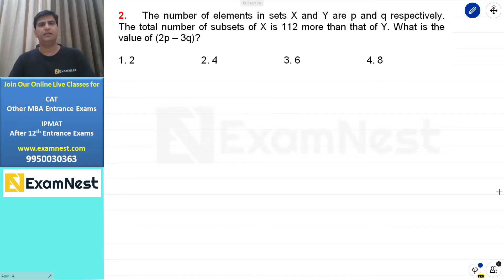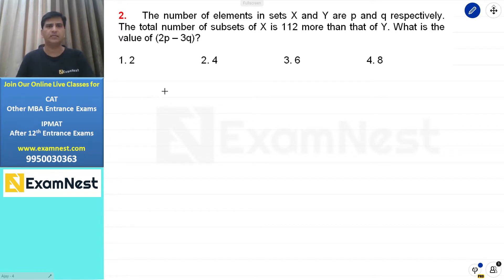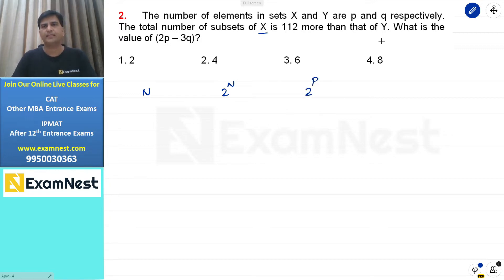Next question: sets X और Y में elements की संख्या P और Q respectively given है। Total subsets of X और total subsets of Y का difference 112 है। 2P minus 3Q की value निकालनी है। Subsets का formula है: N elements हों तो subsets होते हैं 2 raised to the power N। Set X के subsets = 2^P, set Y के subsets = 2^Q, और इन दोनों का difference 112 है।